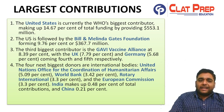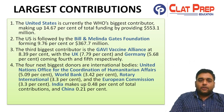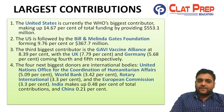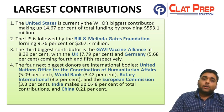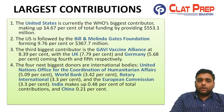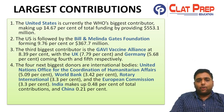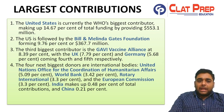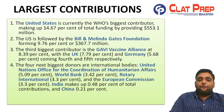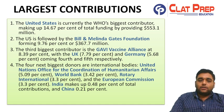The next four biggest donors are international bodies: the United Nations Office for the Coordination of Humanitarian Affairs at 5.09%, the World Bank at 3.42%, Rotary International at 3.3%, and the European Commission at 3.3%. India makes up 0.48% of total contributions, and China 0.21%.